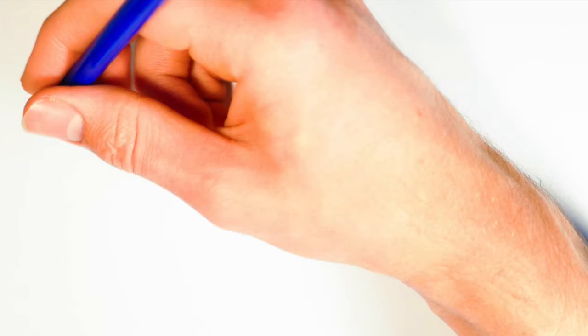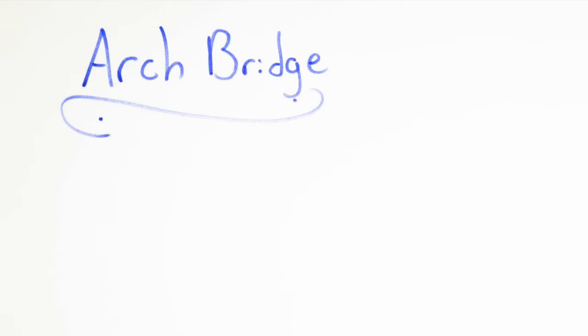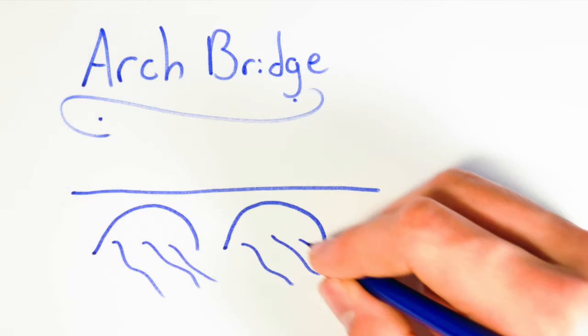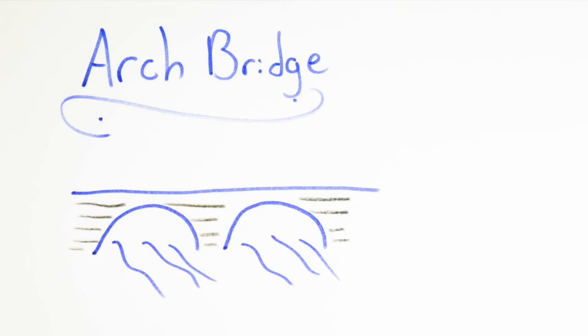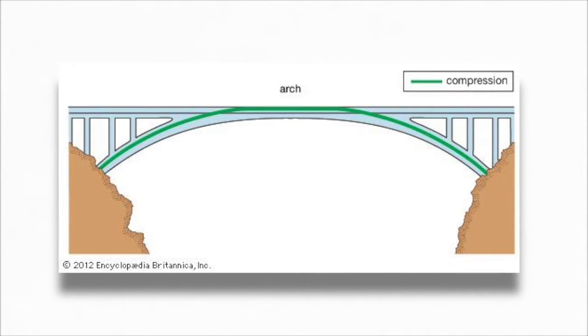An arch bridge utilizes the arch as its main design as this bridge carries its weight outward along the curve of the bridge to the supports at each end. The supports, known as the abutments, carry the load. The abutments also keep the ends of the bridge from spreading out by creating two equal and opposite horizontal forces that push inward on each other.